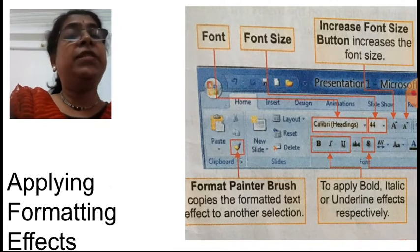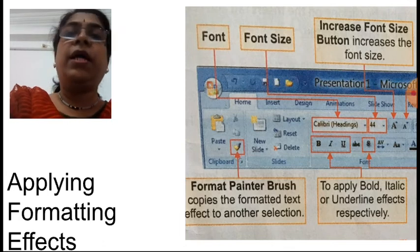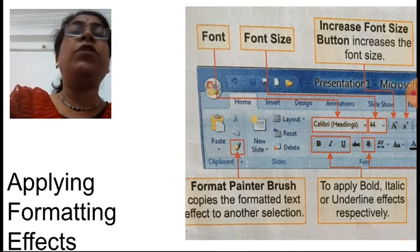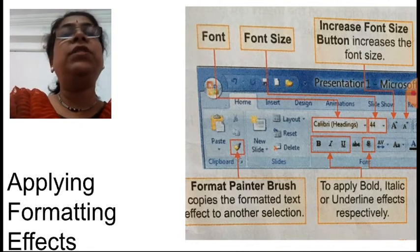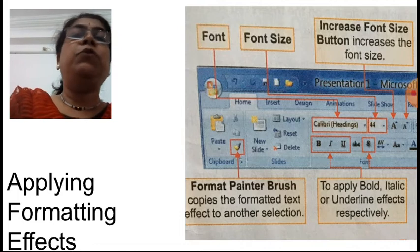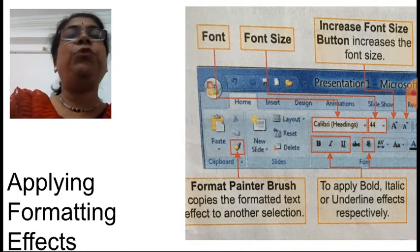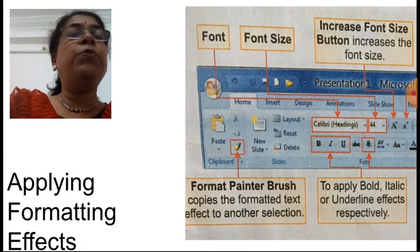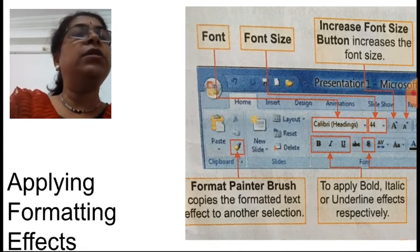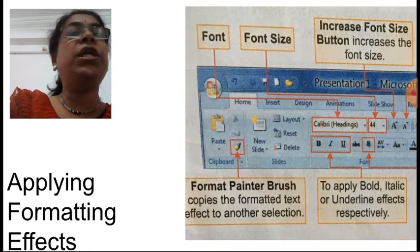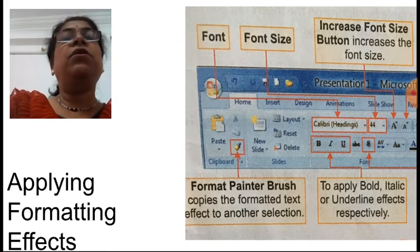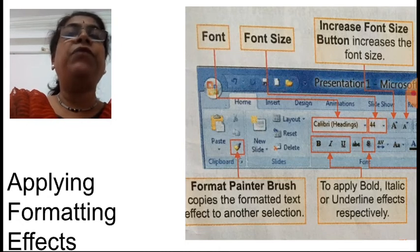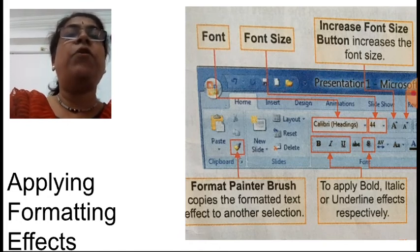Now we will see formatting effects for the text. All formatting effects for text entered on the slides are given in the home tab, in the font group. You can change the font, change the font size, and use format painter — meaning the formatting effects applied to one text can be copied and applied to another text using the format painter option.